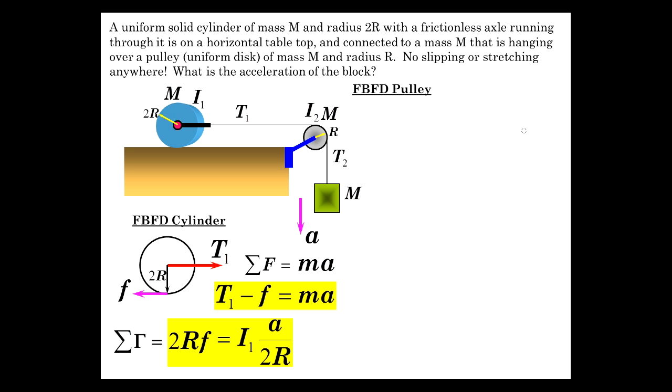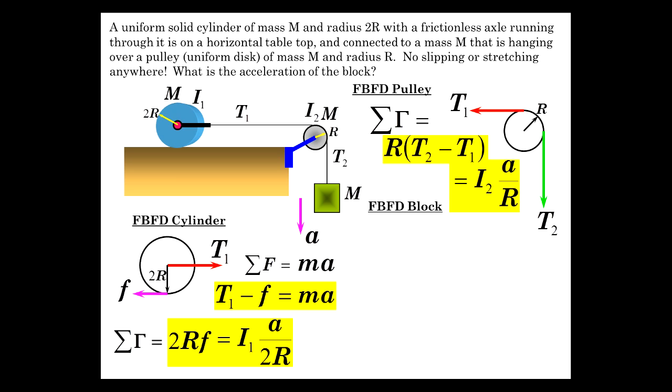And now let's do a free body for the pulley. Once again, we have this extended free body. T1, T2, and you know who wins. That would be T2. They're both working through R. So we have sum of the torques is T2R minus T1R, and that's I2 alpha, which is A over R. So there's our third equation.